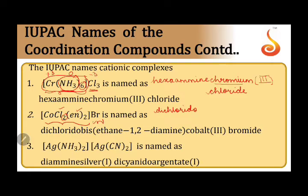There are two chlorido ligands, so dichlorido. There are two ethane-1,2-diamine ligands, but rather than saying 'di-ethane-1,2-diamine,' since the name of the ligand itself contains 'di,' we use the prefix bis, tris, etc. Bis stands for two, tris stands for three, and so on. So for two ethane-1,2-diamine ligands, we call it bis(ethane-1,2-diamine).